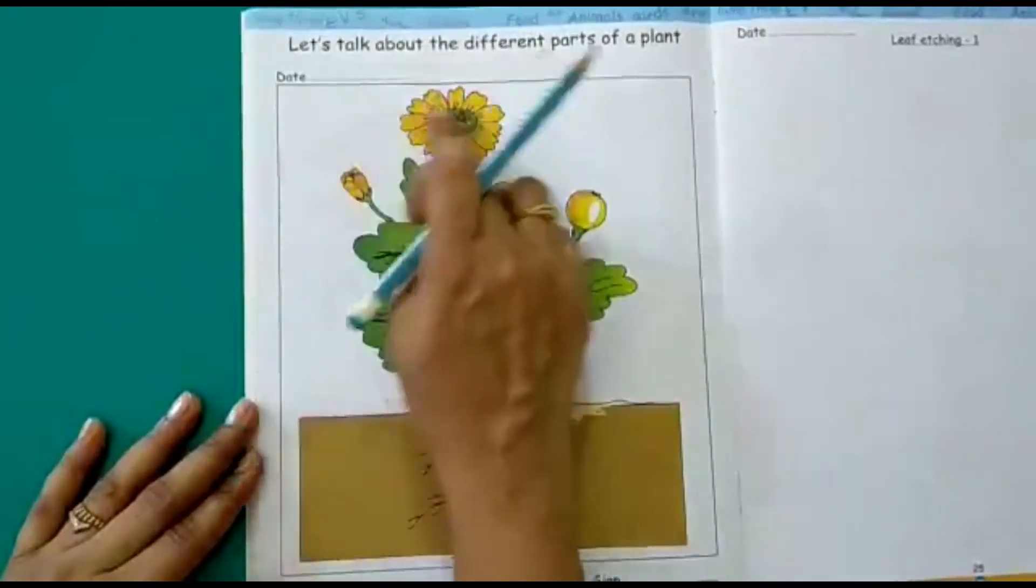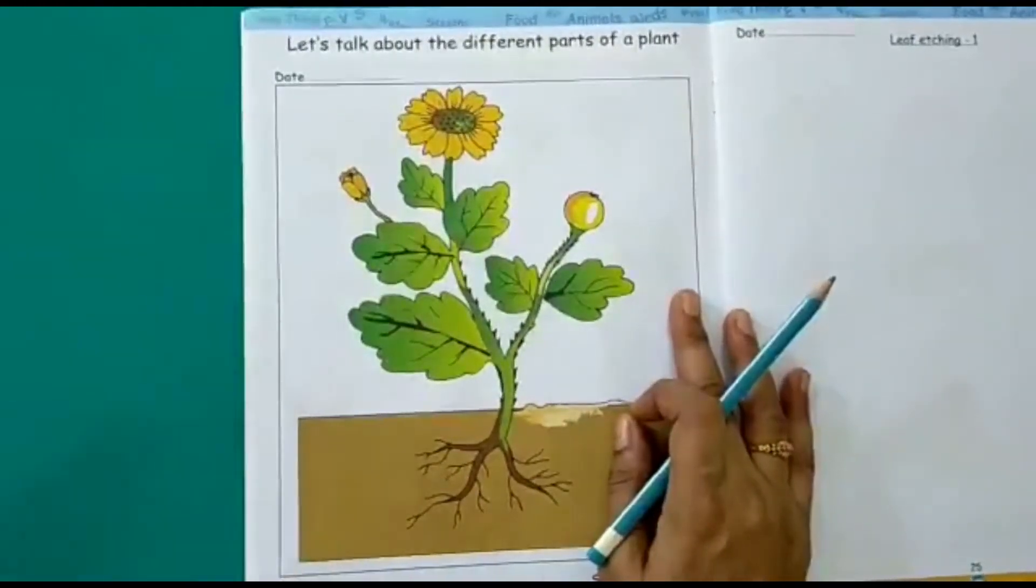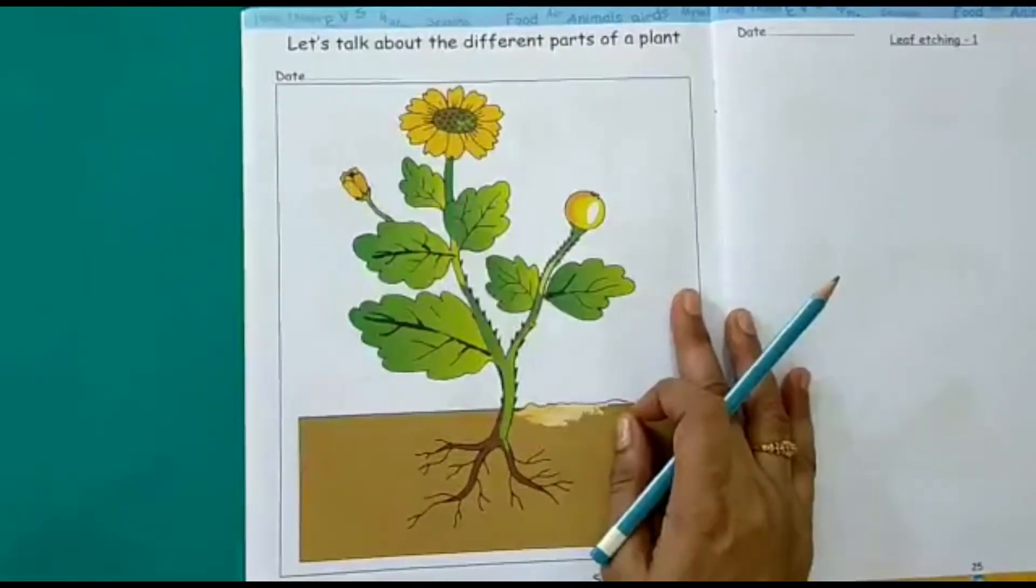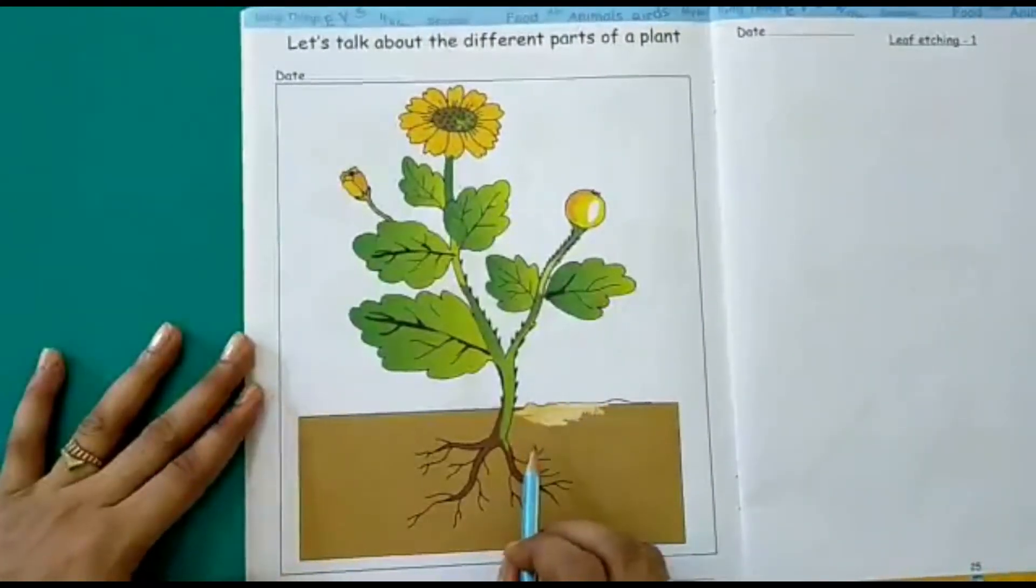So these are the different parts of the plant. Like our body has different parts - we have hands, we have legs, we have eyes. So these are the different body parts. Same way plants also have different parts.